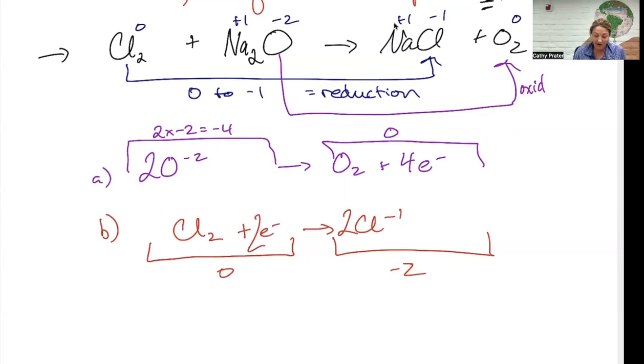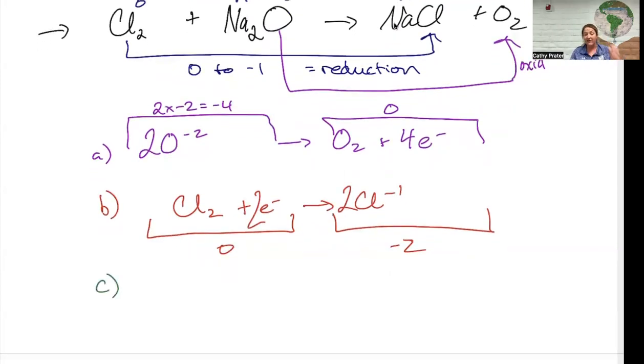For C, what I want to do is I want to put these two back together in such a way that the electrons cancel. Right now, because the electrons that are produced by this reaction are consumed by that reaction, one reaction is producing four electrons and the other one is only using two. And what I want to do is figure out what do I need to multiply each reaction by so that the number of electrons will cancel. If I multiply this whole reaction by two...